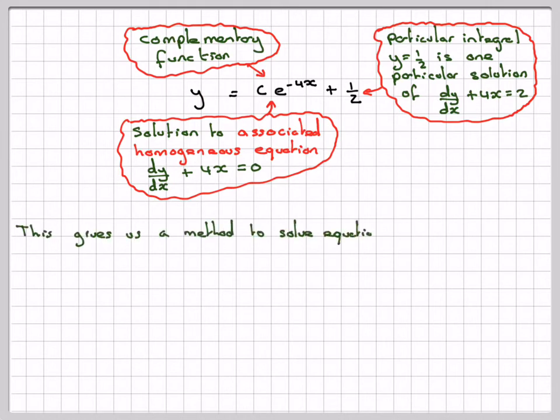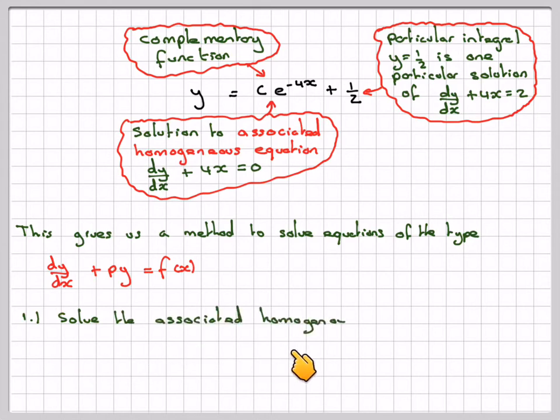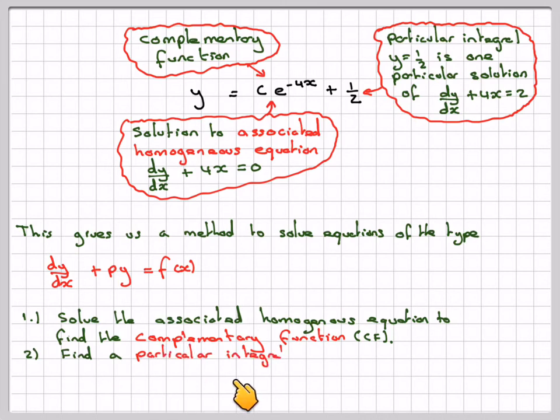One, solve the associated homogeneous equation to find the complementary function, which is CF, and two, find a particular integral, PI, which satisfies the original equation.